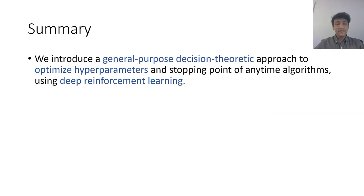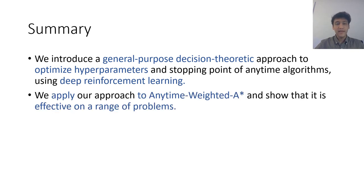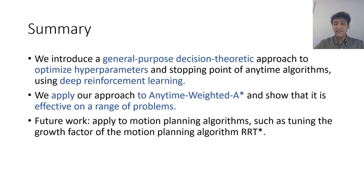To summarize, we have introduced a general purpose decision theoretic approach to optimize hyperparameters apart from stopping point of anytime algorithms using deep reinforcement learning. Then we applied our approach to Anytime Weighted A star to adjust its weight and showed that it is effective on a range of problems as compared to using just static weights. In the future, we will apply our approach to other anytime algorithms such as tuning the growth factor of the algorithm RRT star. Thank you.